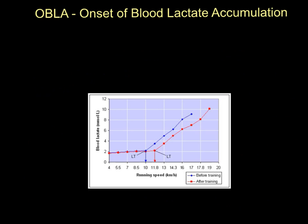Now let's look at OBLA — Onset of Blood Lactate Accumulation. It means the point at which you start to build up lactic acid levels in your blood — basically when you switch to using your lactic acid system. When you pass from aerobic into anaerobic activity, using up your PC and entering the lactic acid system, you are at OBLA. It is also known as lactate threshold — the point at which lactic acid starts to build.